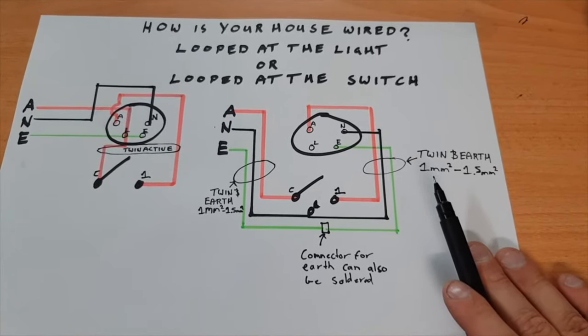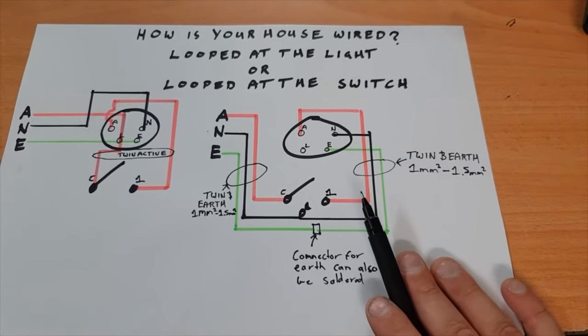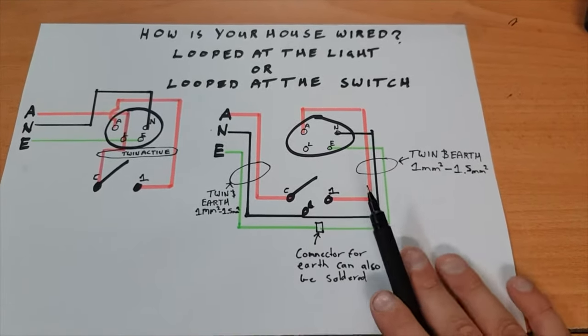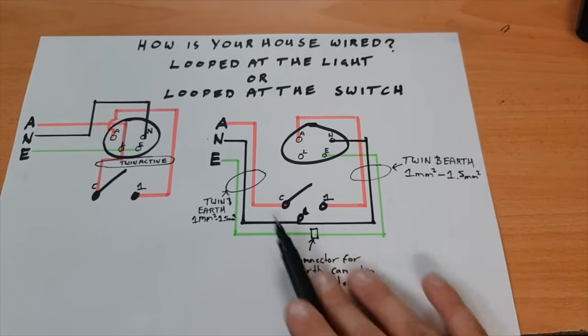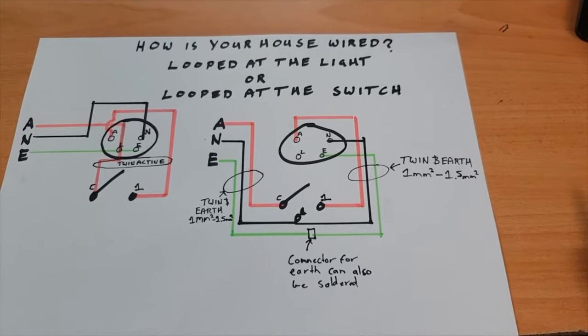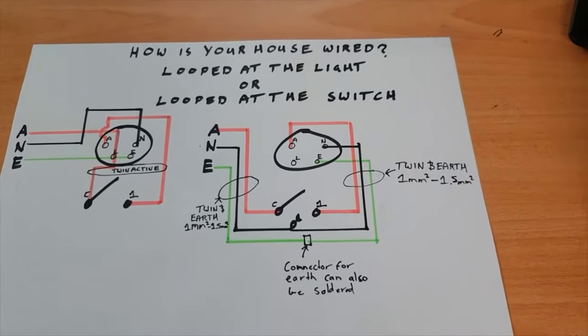So from the 90s onwards, let's say, this is looped at the switch. It's looped at the switch because the power goes to the switch first, not the light. So then you can from this switch just daisy chain all to other switches and then up from those switches to your other lights and so on and so forth.